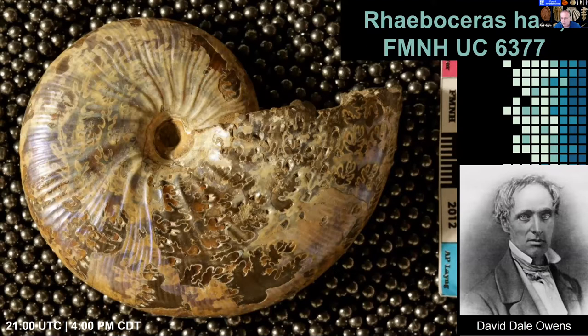When Owen died in 1860 his museum had 85,000 specimens. In 1869 his collection was sold to the state of Indiana and housed at Indiana University in Bloomington. In 1883, a fire destroyed much of the university, including the museum where his collection was stored. I would be very curious to learn if anyone has specimens linked to the David Dale Owen collections — I know there are some at the Smithsonian, mostly vertebrates from the Badlands, but I'm especially interested in any invertebrates.